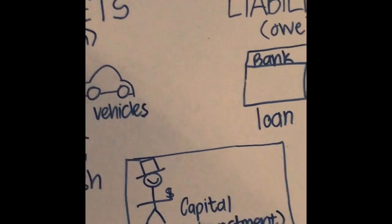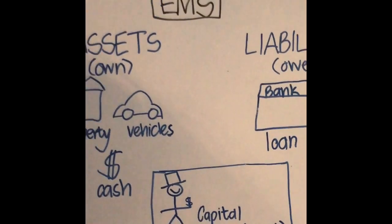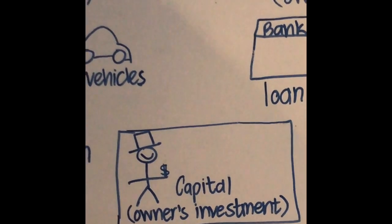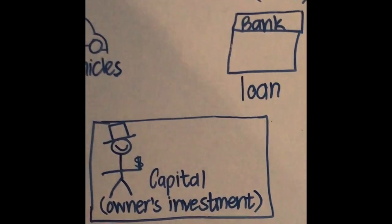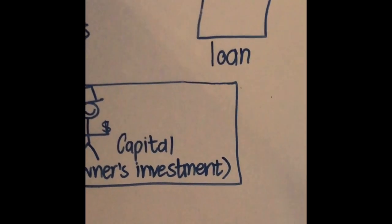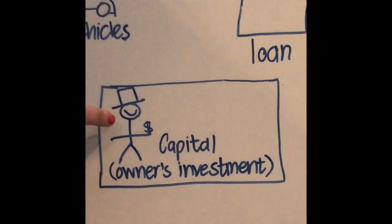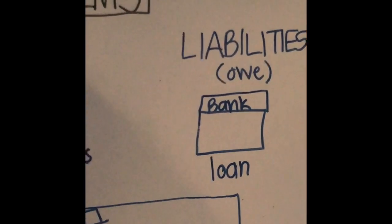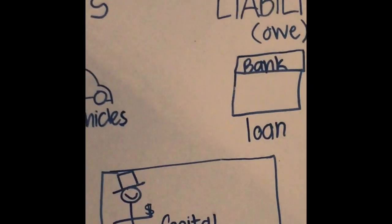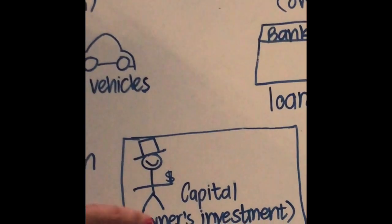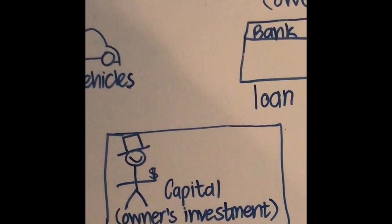The other concept that you need to understand is the concept of capital. Capital is something that you might find a little bit difficult to grasp at this stage. But just remember that all this means is it's the owner putting money into the business in order to buy the assets, in conjunction with borrowing money from the bank to pay for the things that you need. So capital, quite simply, is just the owner's investment in the business.